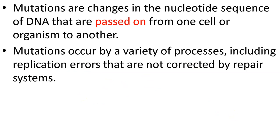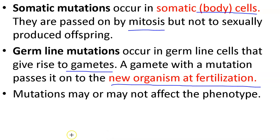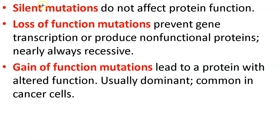There are different types of mutations. Somatic mutations happen in body cells and are passed on by mitosis, but do not go to your offspring. Germline mutations arise in gametes and are passed on to new organisms at fertilization. Mutations may or may not affect the phenotype at all — it's a common misconception that mutations are always bad. Lots of mutations are neutral. Silent mutations do not affect protein function — you don't even know you have them because the protein still works.